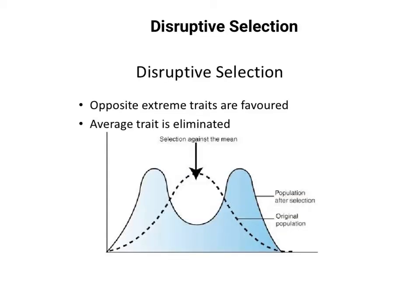The third type of natural selection is disruptive selection. This is when nature favors the two extreme traits over the middle trait. The average trait is going to be eliminated.